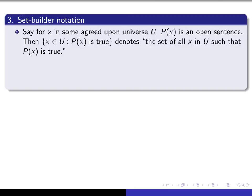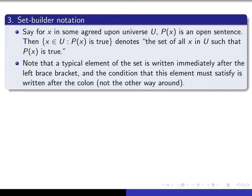Now we talk about what's known as set builder notation. When you see it, you'll notice two brace brackets and a colon, which tells you that you're dealing with set builder notation. You should read it as: the set of all x in the universal set U such that some condition P(x) holds — it's the set of all x in your universe for which P(x) is true. A typical element of the set is indicated immediately after the first brace bracket, and the condition that makes it in the set is given after the colon.